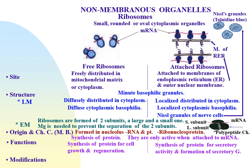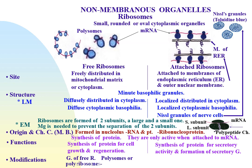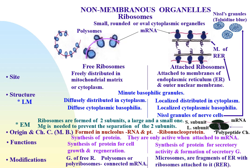Modifications: free ribosomes often occur in groups called polysomes or polyribosomes, in which they are connected together by a thread of ribonucleic acid called messenger ribonucleic acid. Attached ribosomes, on the other hand, form microsomes, which are fragments of endoplasmic reticulum with ribosomes attached to it.